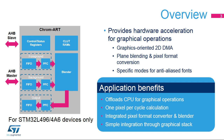It also provides specific modes for managing anti-aliased fonts. The Chrom-ART Accelerator will offload the CPU for most graphical operations with a 1-pixel-per-cycle throughput, integrated pixel format conversion, and blending. It is fully integrated in graphical stacks, making its software integration transparent to the user.